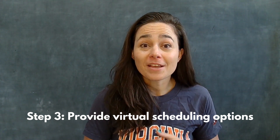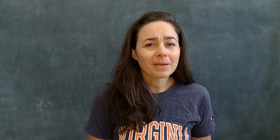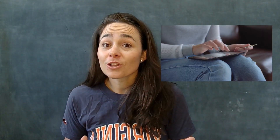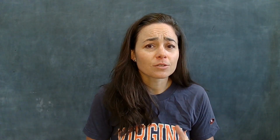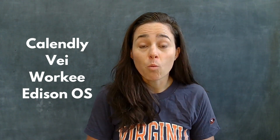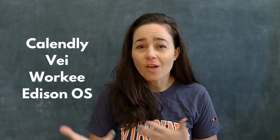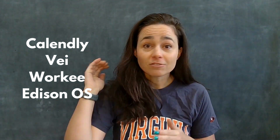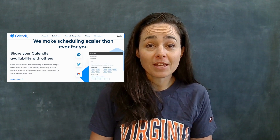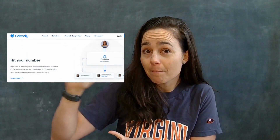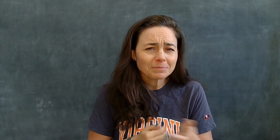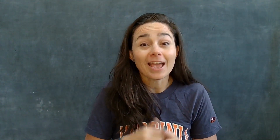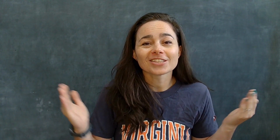Step three is providing virtual scheduling options. This may sound like background, but it's going to look way more professional to the student you're trying to onboard if you have a system in place. Some examples of virtual scheduling are Calendly, Vey, Worky, and Edison. These are all online platforms with free versions — you pop in your schedule, see your availability, pass a link to your students, and they choose what they want. There's no back-and-forth about time zones, which can be maddening and time-consuming. The idea is to really streamline the process.